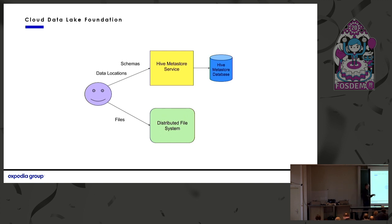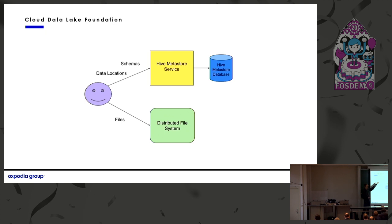A lot of this is around the eventual consistency nature of cloud file systems, because they're not really POSIX file systems — they're actually object stores. Often you can't tell when data is complete, and there are no atomic move operations. So we use the Hive Metastore as a way to register when data is available. All our users are directed to the Metastore — they find the data set they're looking for, get the data locations, and then access the data on S3. The Hive Metastore has a backing relational database, which is mainly an implementation detail you don't need to worry about too much.